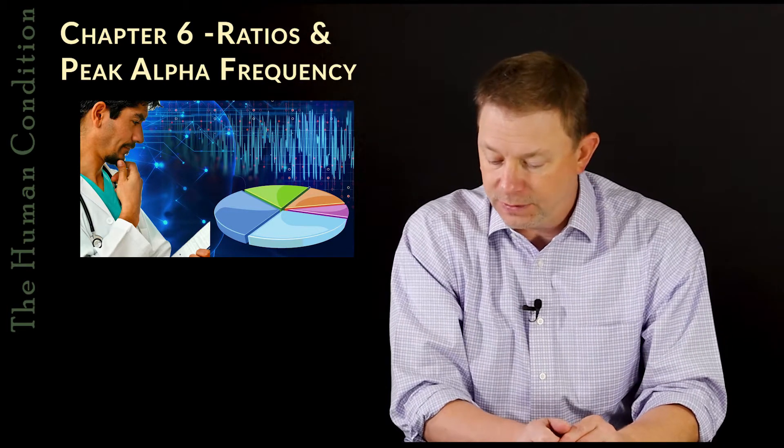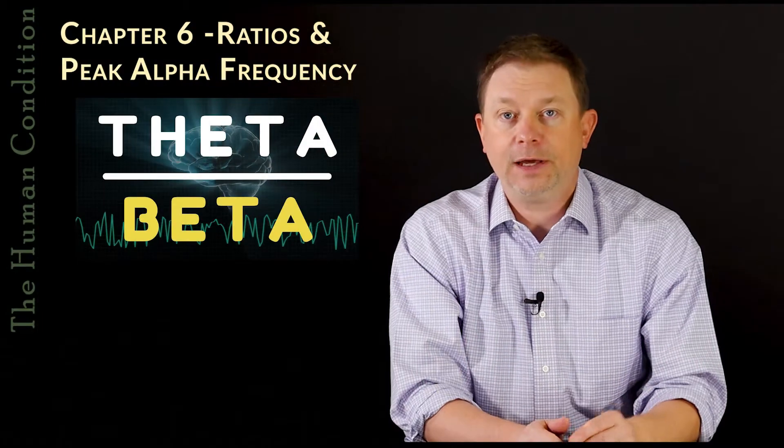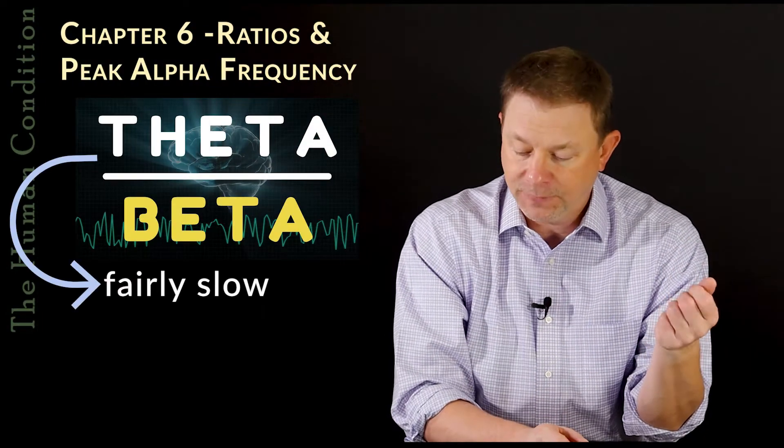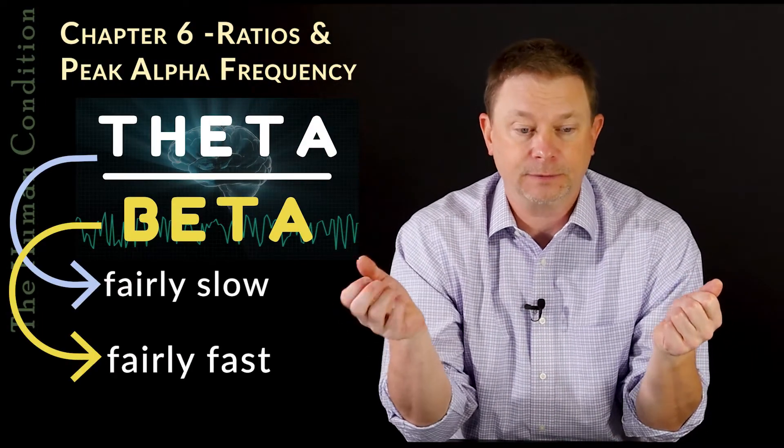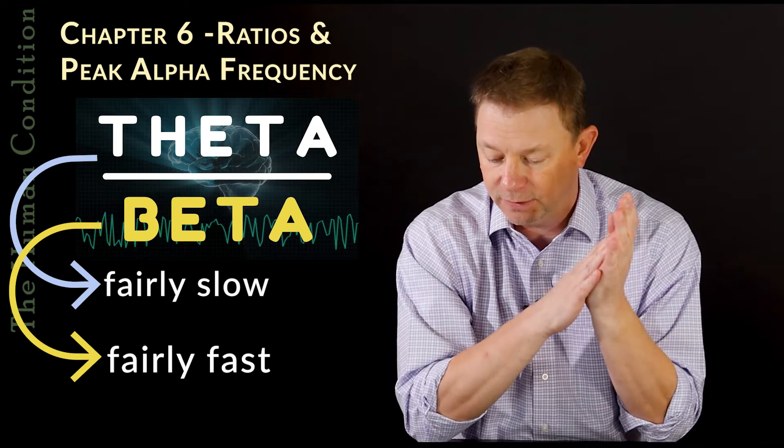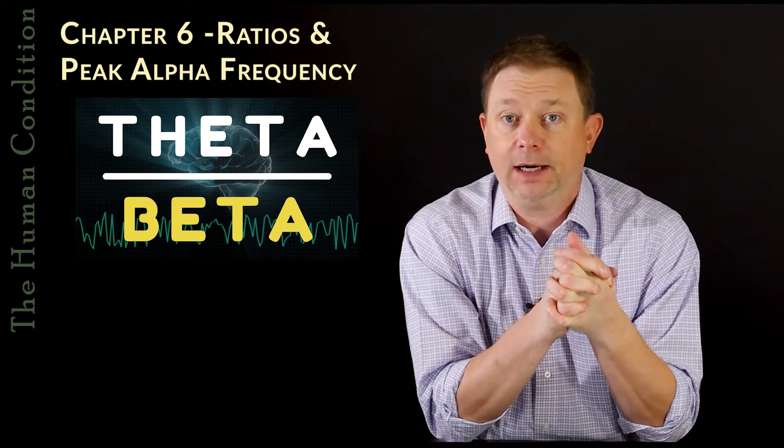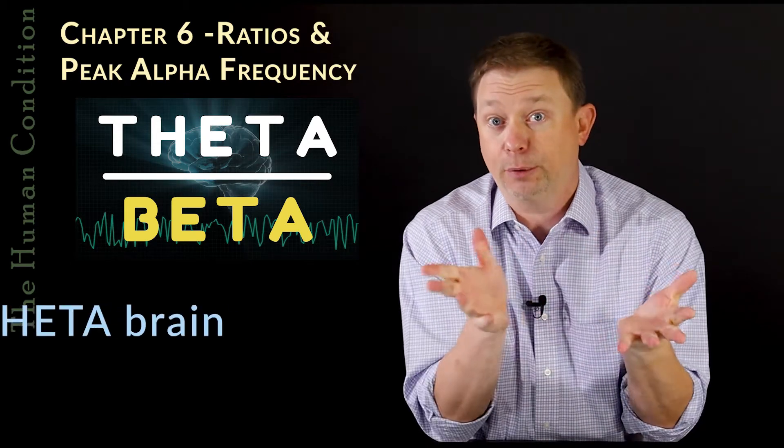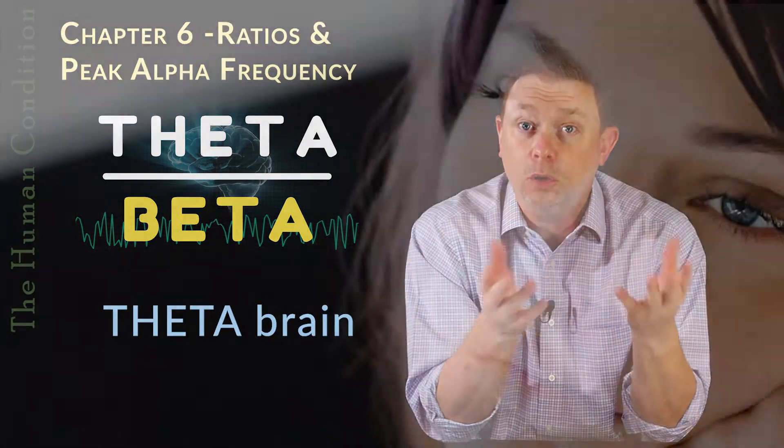The first of them is the theta to beta ratio. The theta waves are fairly slow waves and beta waves are fairly fast waves. If you think of what we have kind of a nickname for people that have a lot of theta waves or very high amplitude theta waves, we call them a theta brain. They're kind of slowish, not obtunded, but kind of sluggish.